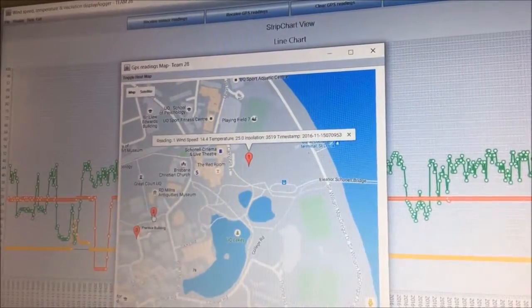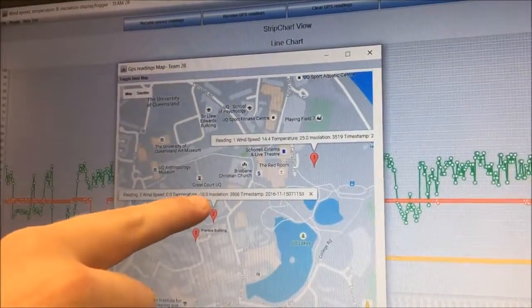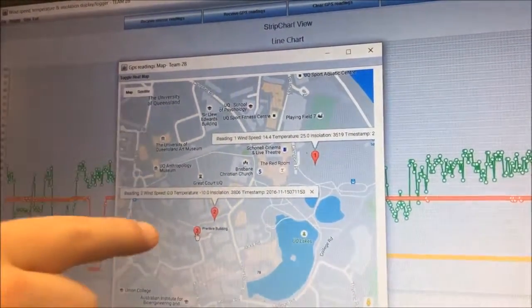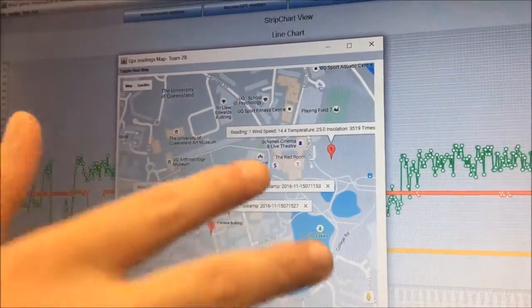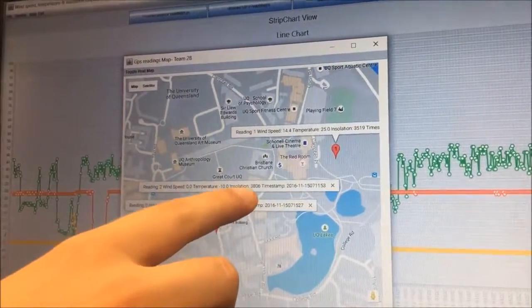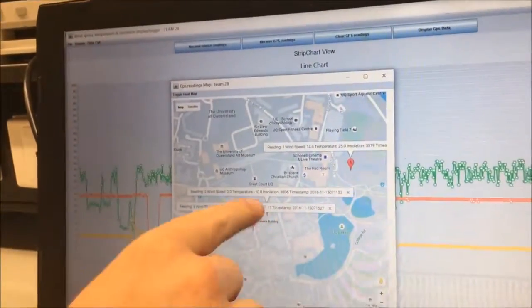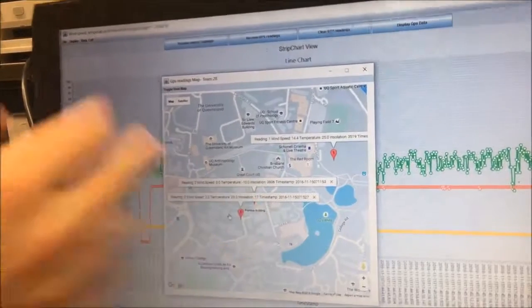Location two, this is our low temperature one, so wind speed none, temperature minus 10 degrees, and light level normal. And then a third and final location, we'll have wind speed none, normal temperature about 23 degrees, and insulation at 17. So as you can see, 4000 is a normal sun level, so me covering at 17 with a little bit of light getting in the cracks, that's a pretty good reading.